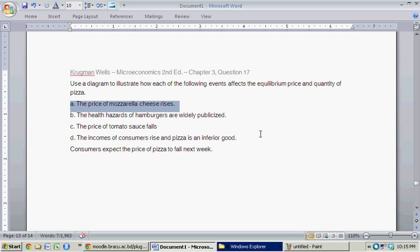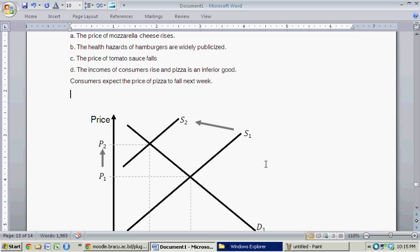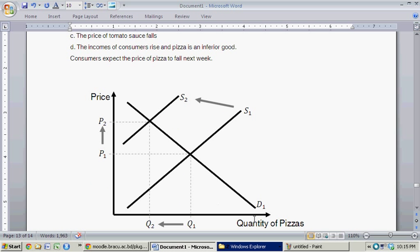This is an increase in the input price, and I drew the effect here. So given before, you have once again price labeled on the vertical axis, quantity of pizzas labeled on the horizontal axis.